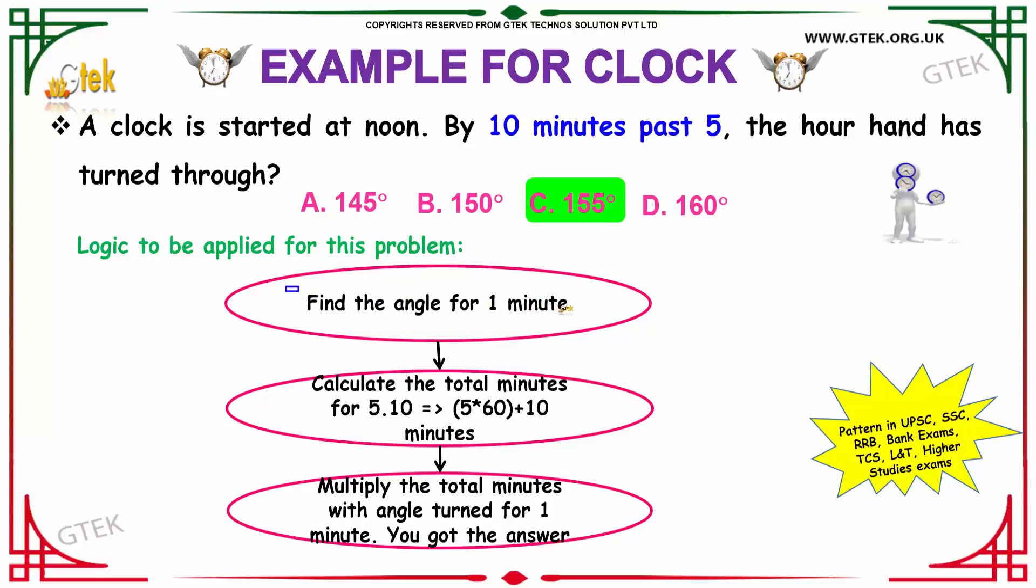First, we have to find the angle for 1 minute. For 1 minute, how much angle does the hour hand make? Then, we have to calculate the total minutes for 5:10. That is, till 5:10, how many minutes has the hour hand passed? It is obtained by multiplying your 5 with 60 plus 10 to convert your hours into minutes and add 10 to it. Then, by multiplying the total minutes with the angle turned for 1 minute, you will get your answer.